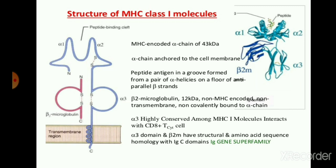Alpha 3 is highly conserved among MHC class 1 molecules and interacts with CD8+ T cytotoxic cells. These MHC class 1 molecules represent the antigen towards the T cytotoxic cell. Whenever the T cytotoxic cell recognizes the antigen, it synthesizes and releases cytokines and chemokines towards the antigen for its elimination from the body. Alpha 3 is anchored in the transmembrane of the T cytotoxic cell.